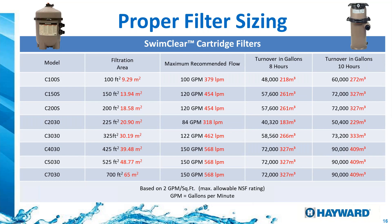And then my favorite — cartridge filters. Cartridge filters go anywhere between 100 to 700 square feet. At 100 square feet, the maximum recommended flow is 100 GPM, going up to 150 GPM. The larger the surface area on the filtration, the more debris the cartridge filter can hold before you have to go in and wash out the cartridge elements.